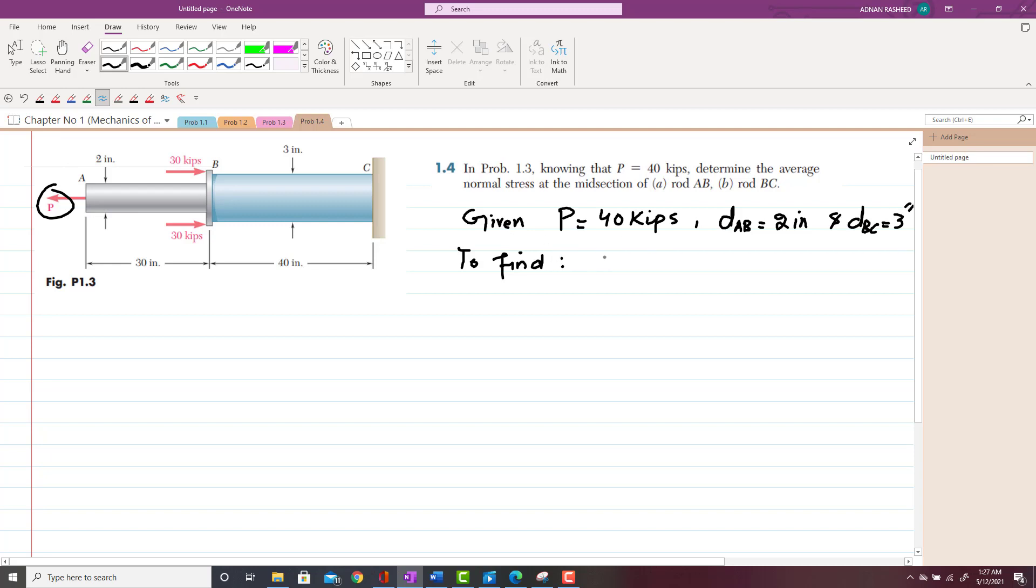So you have to find the average normal stress at the midsection of AB and average normal stress of section BC. So let us start with the solution. As from the figure, you can see that rod AB is subject to only tensile stress, which is P, and this P is 40 kips.